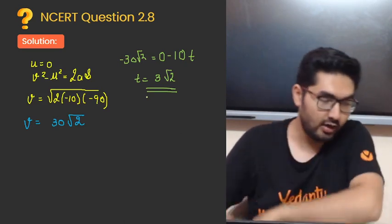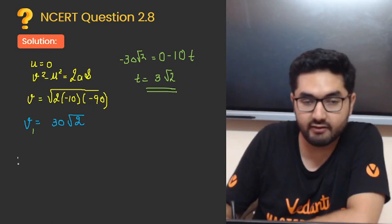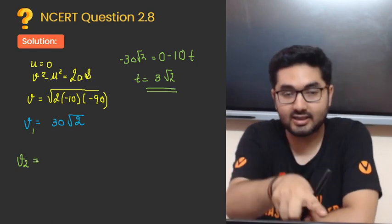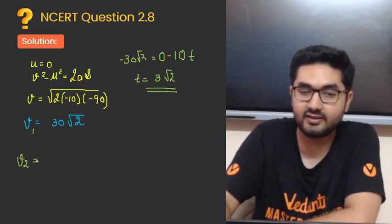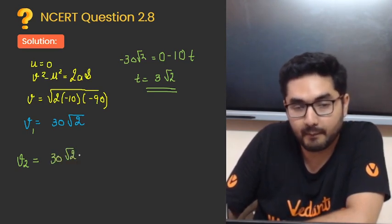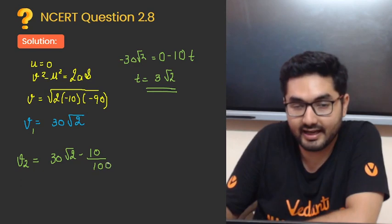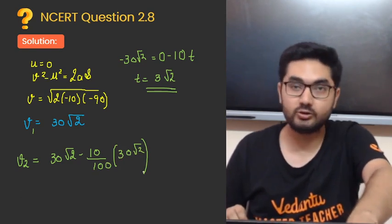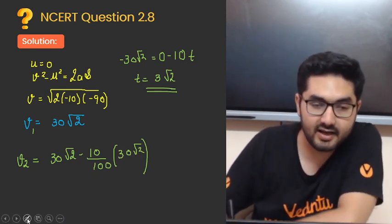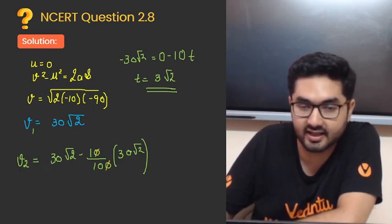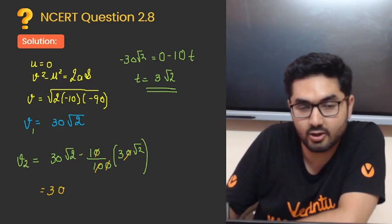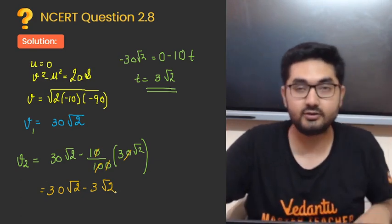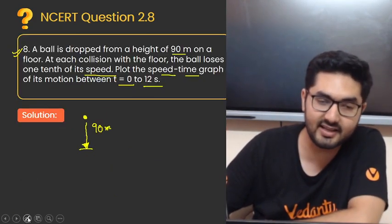Ab agle mein jab woh vaapis upar jayega, maan lo isko maine v1 bol diya, v2 agar main nikalun. Ab v2 kya hai? Matlab iska kya likha hua yahan pe? Loses one tenth of its speed. To matlab kitna ho jayega? 30 root 2 minus one tenth, matlab 10 by 100, into 30 root 2. Yahan se agar aap solve karoge, yeh yaas se yaas cancel ho jayega. To yeh ho jayega 30 root 2 minus 3 root 2. Yeh uski woh wali velocity ho jayegi jab vaapis jayega.